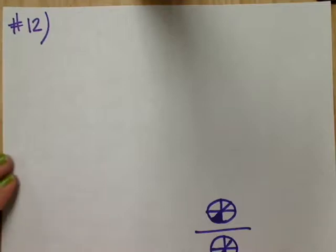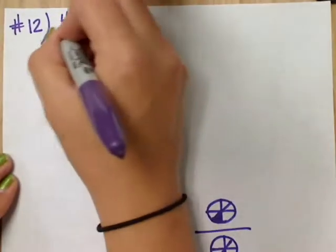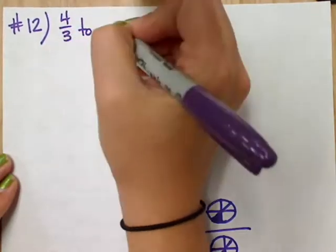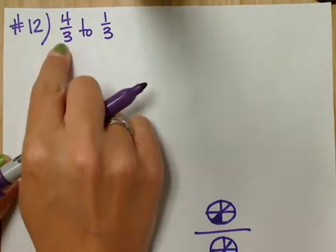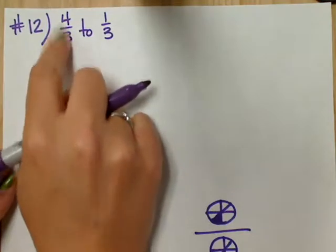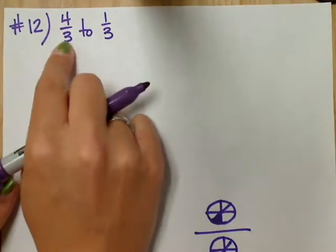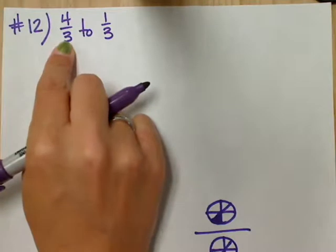Problem 12 says four-thirds to one-third. What kind of number is this? What kind of fraction? Improper, which means it's a whole number. It can be changed into a mixed number.